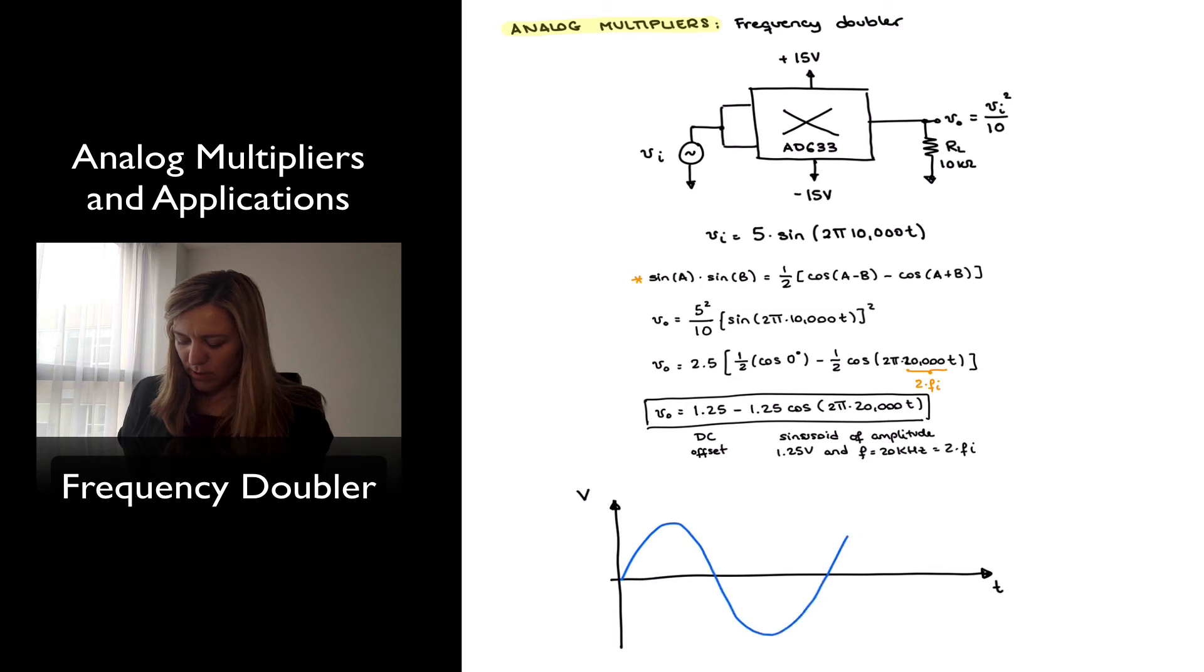My input signal will be a sinusoid, again, of amplitude 5 volts, so this will be 5 volts and negative 5 volts, no offset, and frequency equal to 10 kHz. So my Fi is 10 kHz.